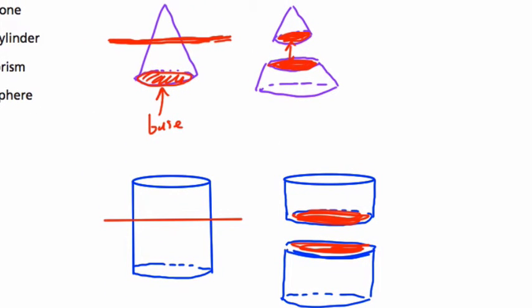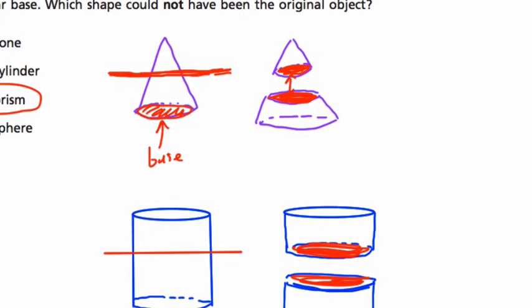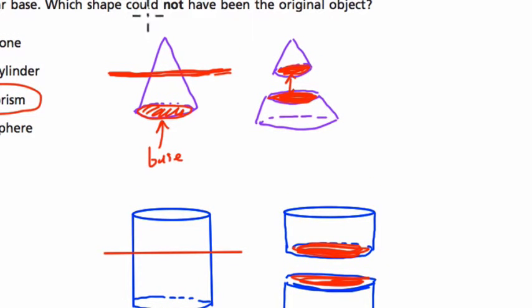So what's left? The answer is the prism. Why? What's a prism? Well, we can't get the circle out of the prism because the prisms don't allow for curvature.